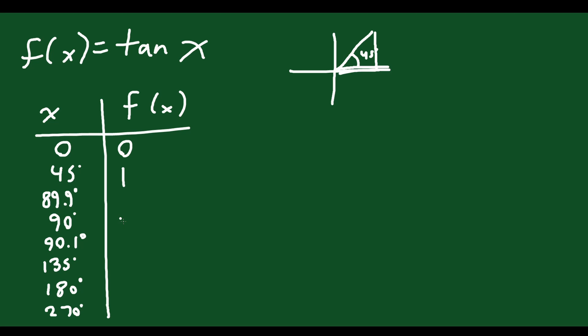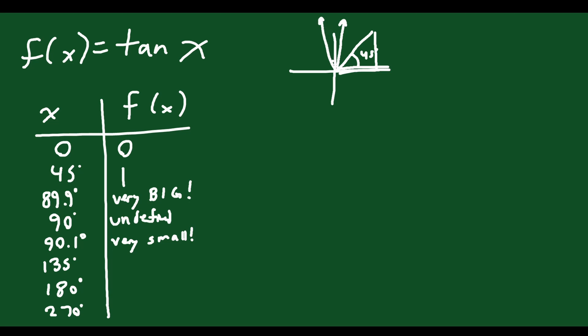If you do tan of 89.9999, you get a number in the millions — the slope becomes very, very big. So at 89.9 the slope is very big. If you do just slightly bigger than 90, like 90.1, you get the exact opposite: it's a big number but in the negative direction, so it's like negative a million — very small. At exactly 90 you get undefined. This makes sense on the graph: just shy of 90 is very steep in the positive direction, but just past 90 is very steep in the negative direction because you're going down as you go to the right.